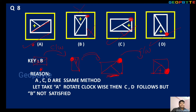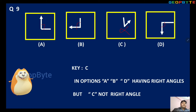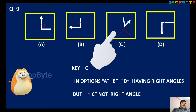Key is B. Reason: A, C, D follow the same clockwise rotation method, but B is not satisfied. Answer B. Next — this is from 2017. Very easy question: in options A, B, D, there is a 90-degree angle, but option C does not have a 90-degree angle. Options A, B, D have right angles, but C is not a right angle, so option C is the answer.